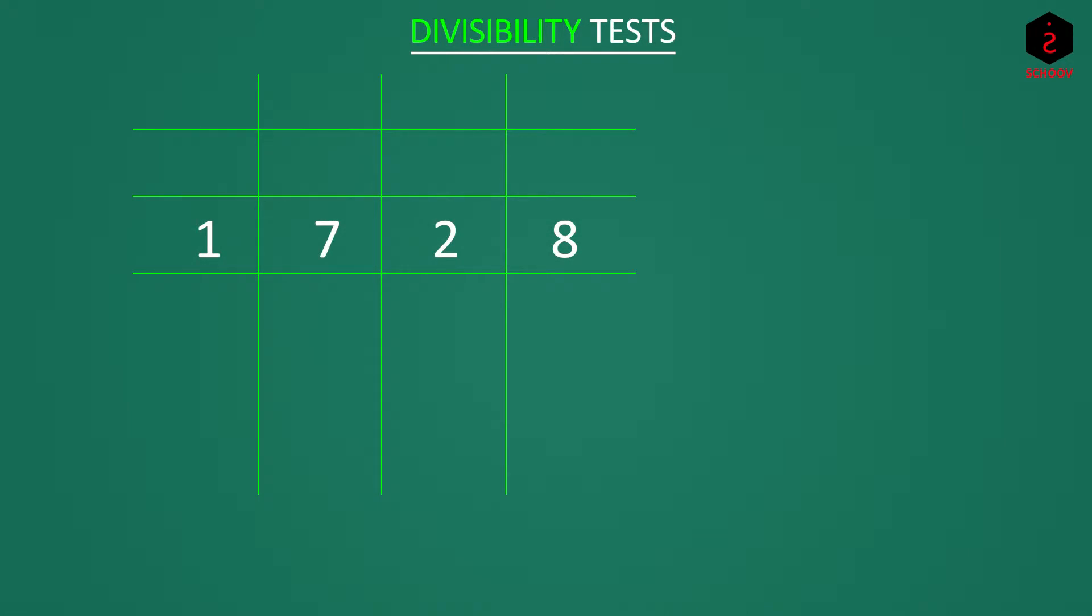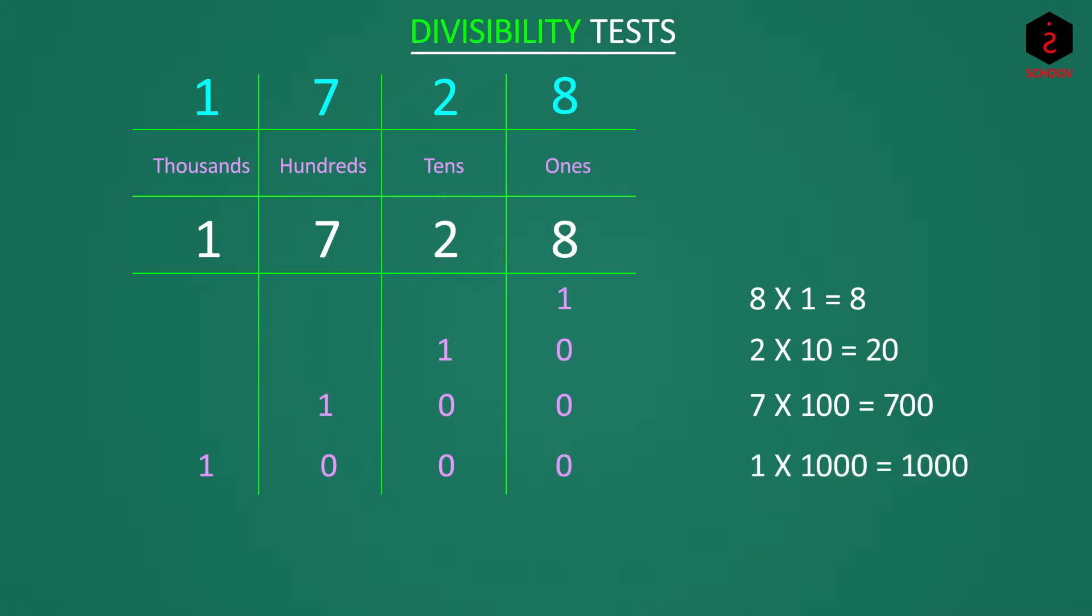So in 1728, place of 8 is 1s, 2 is 10s, 7 is 100s, and 1 is 1000. So corresponding place values are 8 x 1, which is 8, 2 x 10, which is 20, 7 x 100, which is 700, and 1 x 1000, which is 1000.